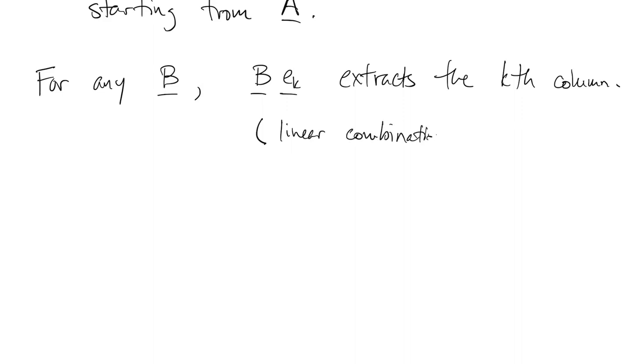Now we do need a little observation first. If you have any matrix B, then B times EK, where that's the kth column of the identity matrix, that simply extracts the kth column of B. So one way to think about that is it's a matrix times a vector, so you get a linear combination, but it's a linear combination where the kth element is one and the others are zero, so you just get the kth column of B.